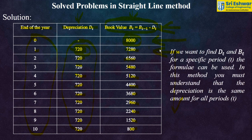Similarly, the book value is calculated for the second, third, fourth, fifth, sixth, seventh, eighth, ninth, and tenth years by subtracting 720 each time. The book value reduces gradually over the years. From this problem, we observe that the depreciation amount is the same — rupees 720 — for all periods. If you want to find Dt and Bt for a specific period, the formula can be used directly.